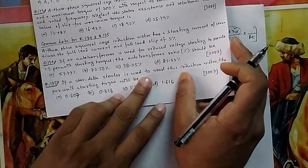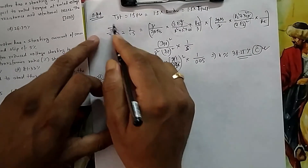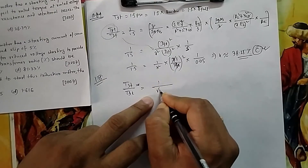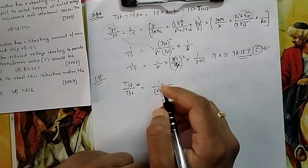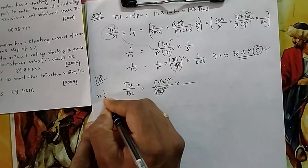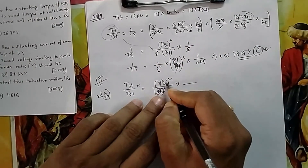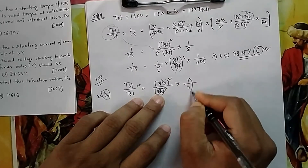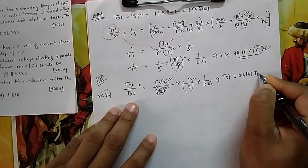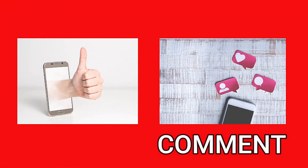Now, if a star-delta starter is used instead: with star-delta starting, voltage is reduced by a factor of 1/√3, so x = 1/√3. Substituting into T_start / T_fl = x² · (I_fl/I_start)² · (1/S_fl) = (1/3) · (1/7)² · (1/0.05), the starting torque comes to 0.8167 of full load torque — that is 0.8167 per unit, which is option B. If you liked the video, press the like button and leave your comments.